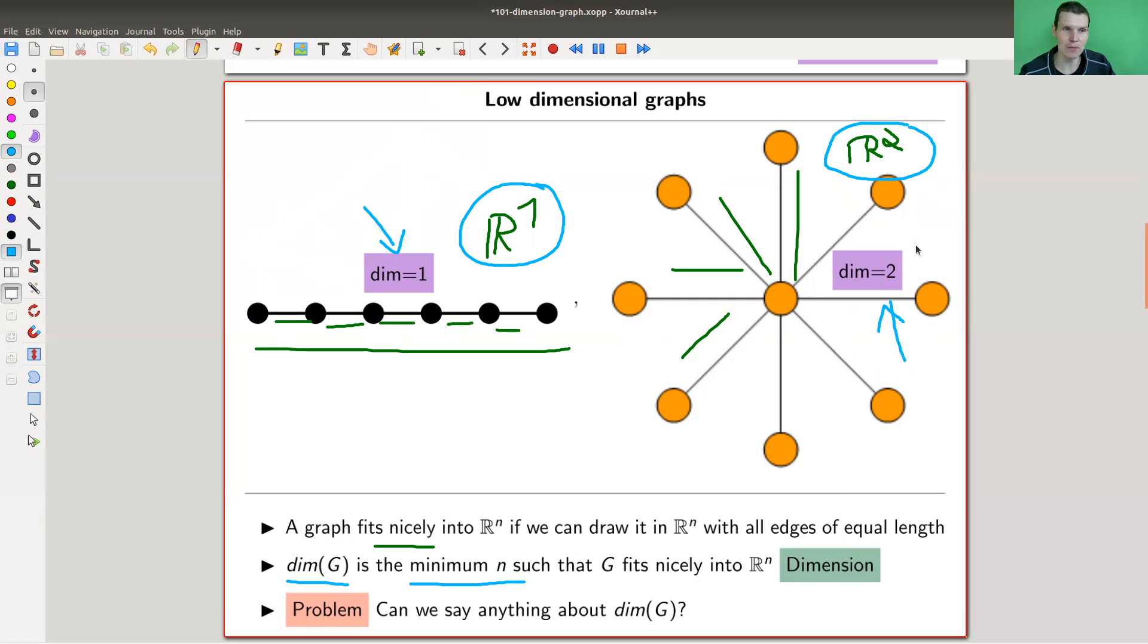So the dimension is really referring not to the graph, although that's how we denote it, but it's actually more referring to how we can embed it. So what's the space that we need to embed it, having this property that everything is of the same length. And as usual in mathematics, the first question is, can you say anything about this number? Or is this just impossible? Or is it boring? Or we don't know, right? Can we say anything about this number?